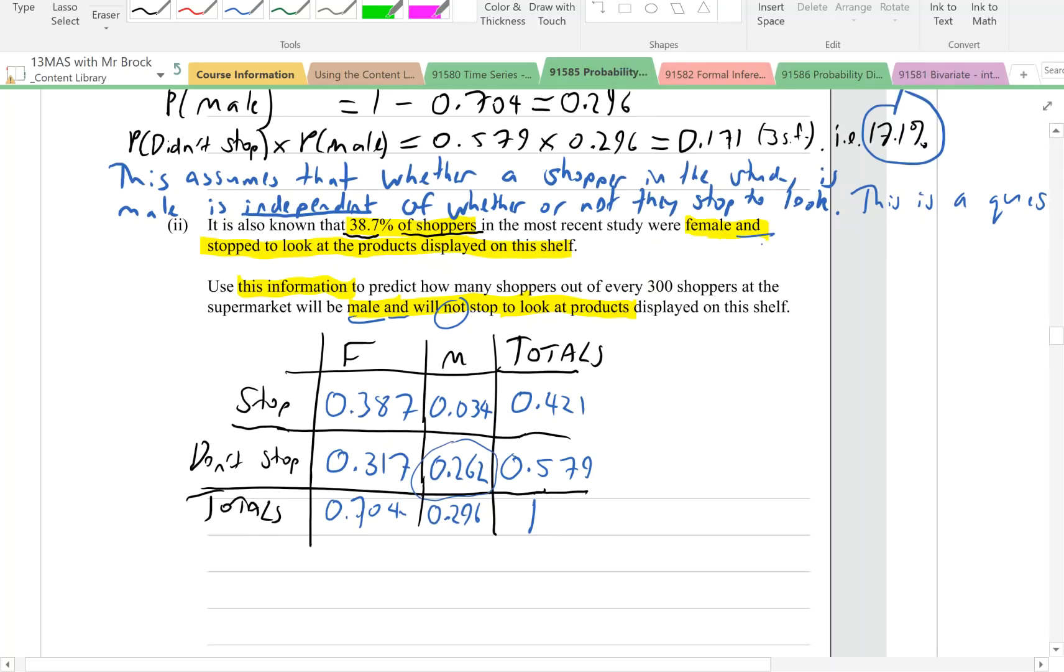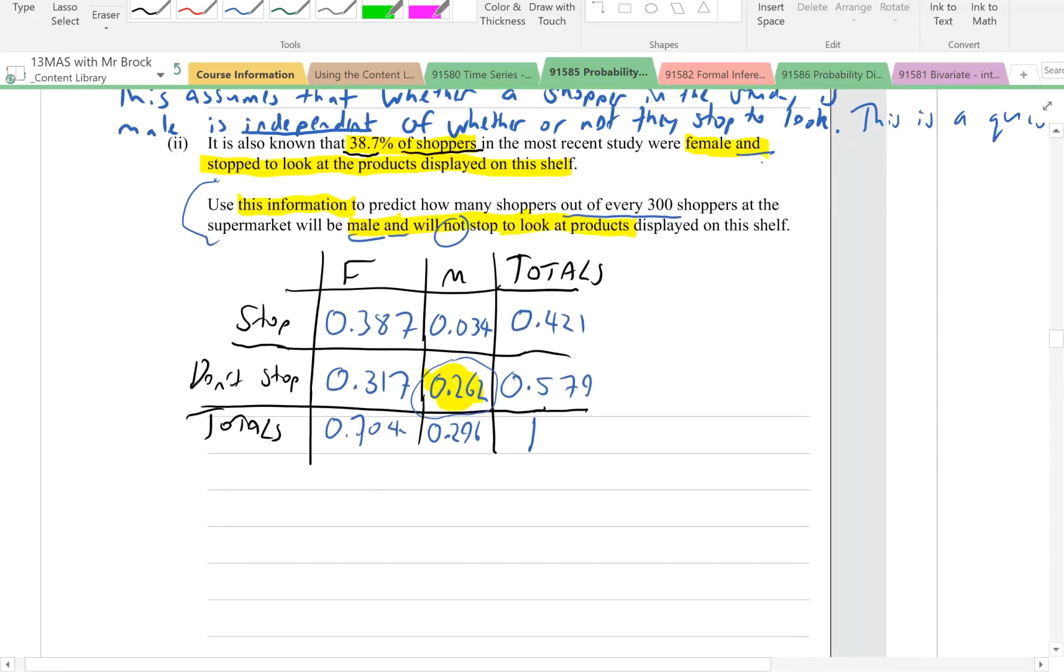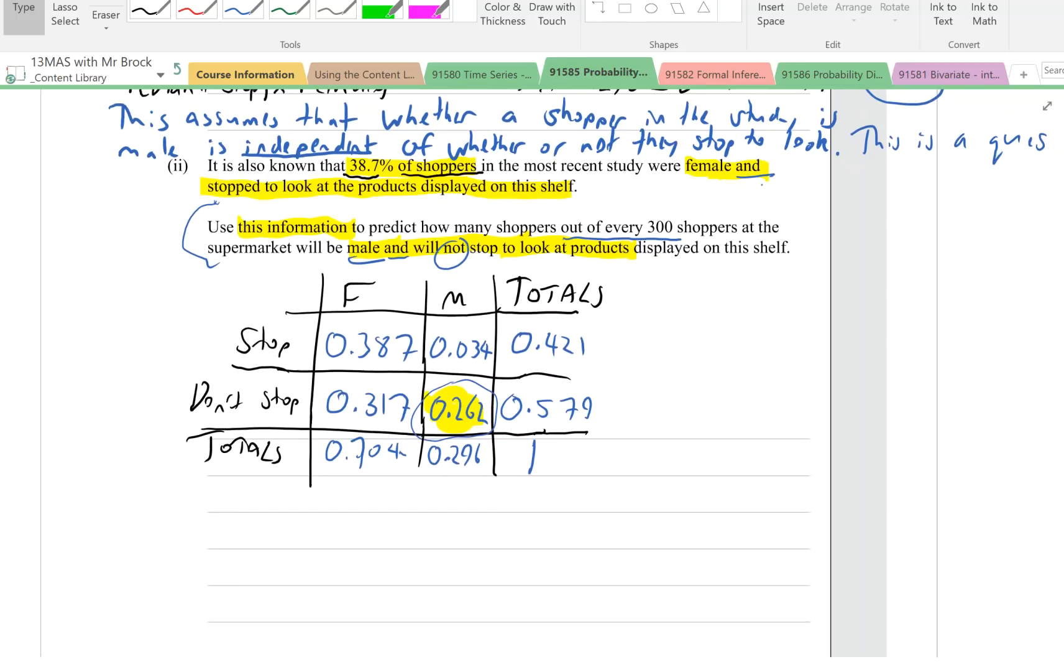What was the question again? When you've filled in the table, it's always good to reread the question so we remember the detail. Use this information to predict how many shoppers out of every 300 shoppers in the supermarket will be male and will not stop. So male and not stop is here.